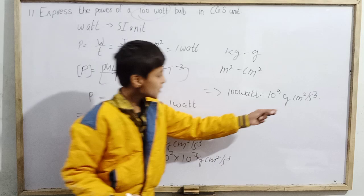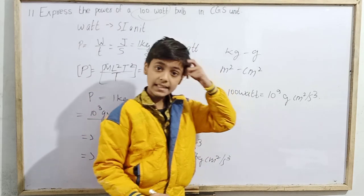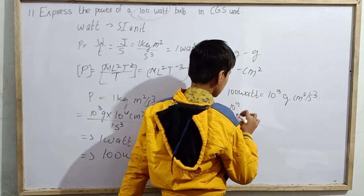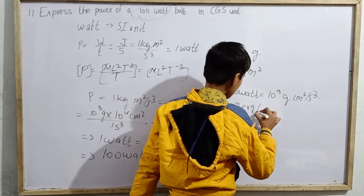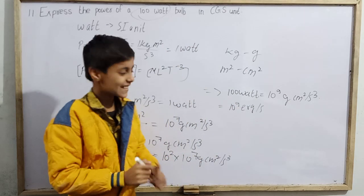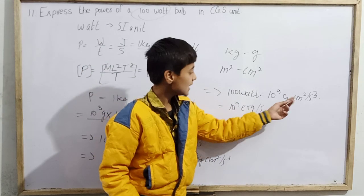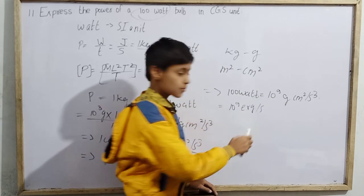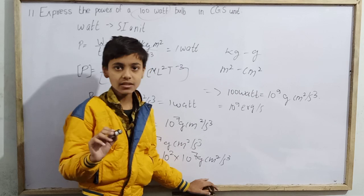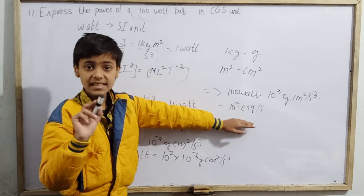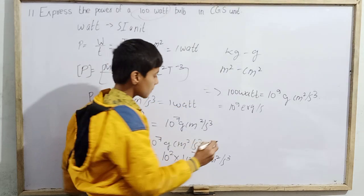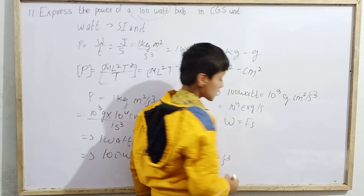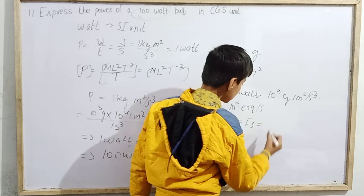If you still want, you can also express this as erg per second. 10⁹ erg per second. The erg comes from the CGS unit of work: 1 gram·cm²/s² is called 1 erg. That is the CGS unit of work.